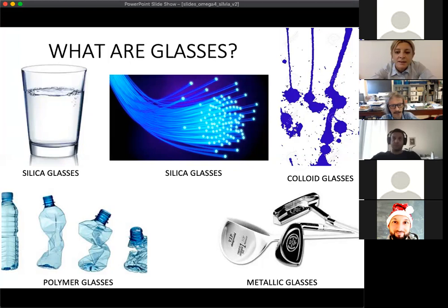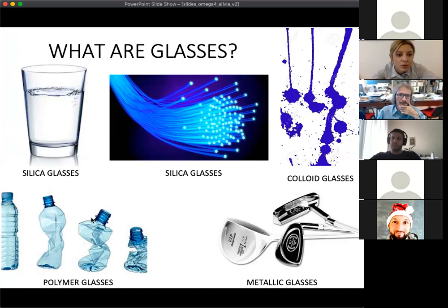As we know, glasses are everywhere around us in our daily life, from window panels up to glasses that we use to drink. These are made of silica glasses. Other examples of glasses made by silica are optical fibers, which are the infrastructure for internet communication.